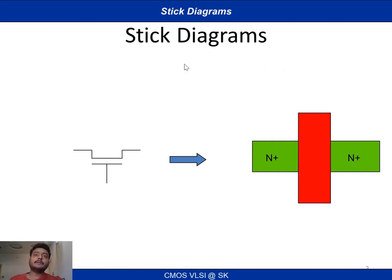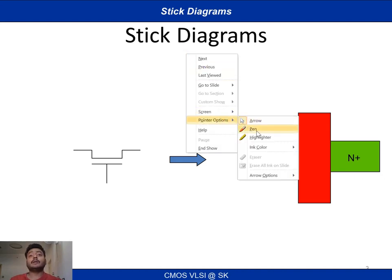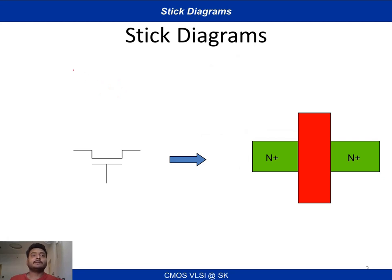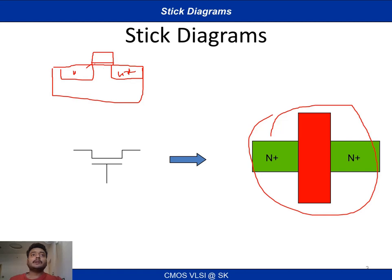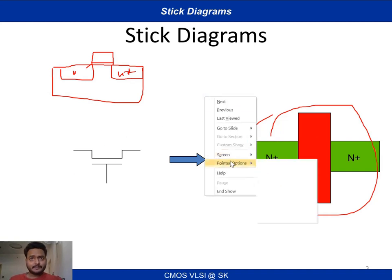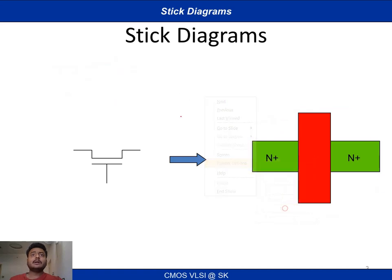If you go for a cross-sectional view, you will see it in a different way. In the cross-sectional view, this will be our source and this will be our drain region, with polysilicon here, silicon dioxide, N+ and N+. If you see the same structure from the top view, it will look like this. You are not going to see the silicon dioxide layer because it will be covered by polysilicon — it will be just below the polysilicon layer. This is how you represent your transistor.